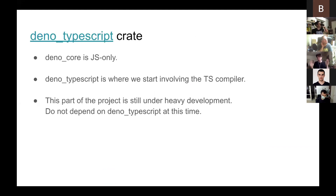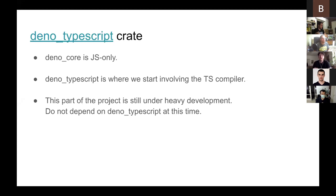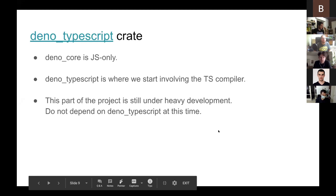The deno_typescript crate — everything I've described so far is JavaScript only, with no concept of TypeScript. When we start adding TypeScript the equation gets really complicated. This is a crate we've published but are still heavily iterating on. I would say don't depend on deno_typescript at this time — unfortunately we're not yet able to provide a really stable way of compiling TypeScript in Rust, but hopefully over time we'll work that out.